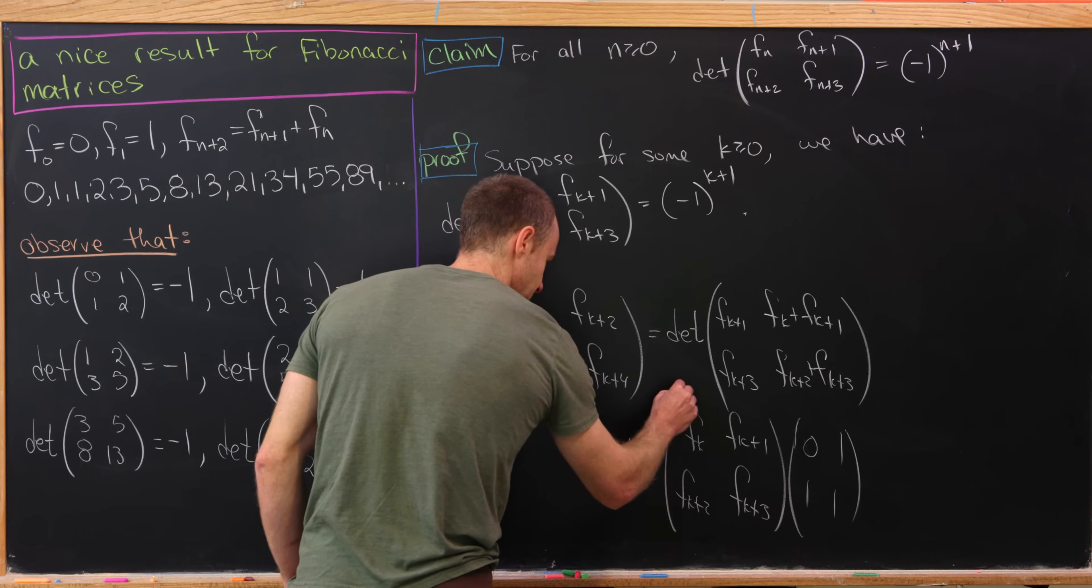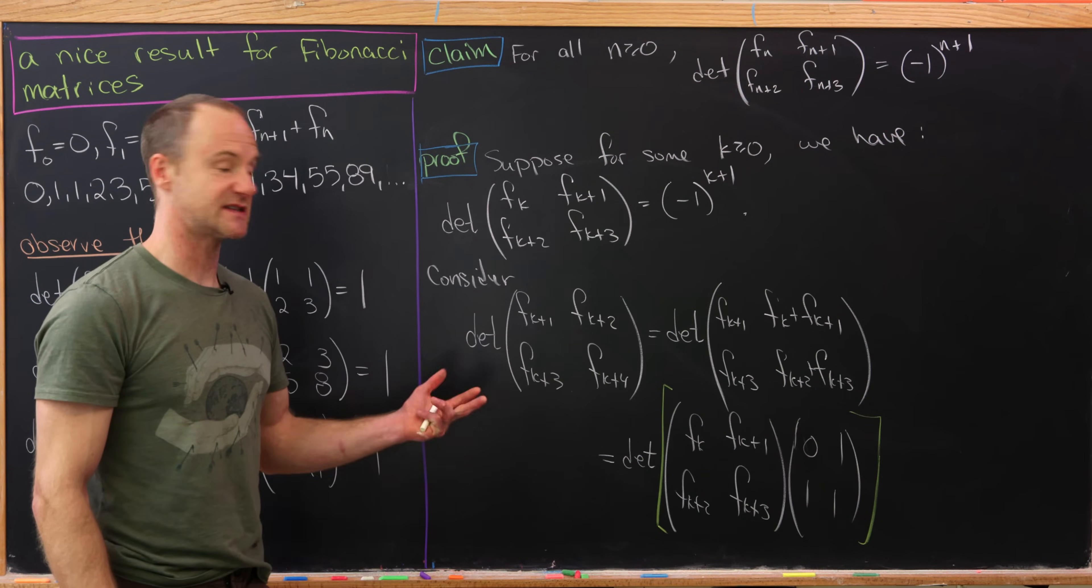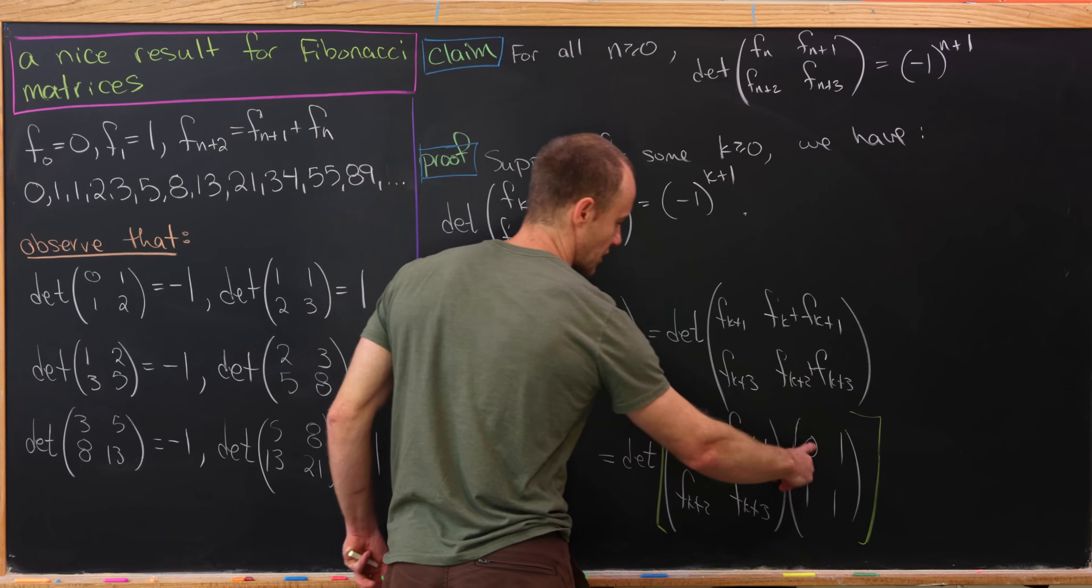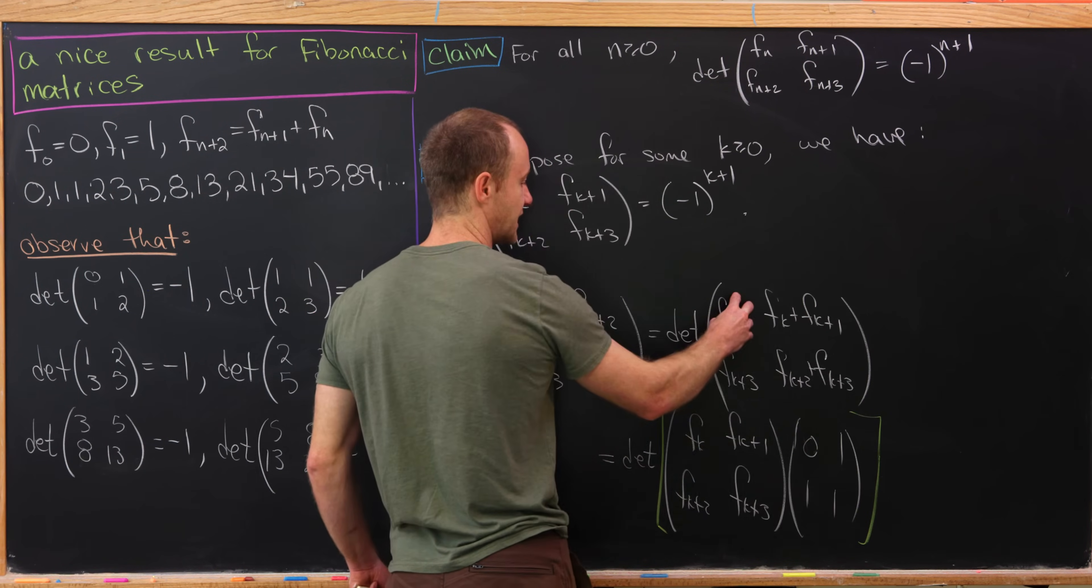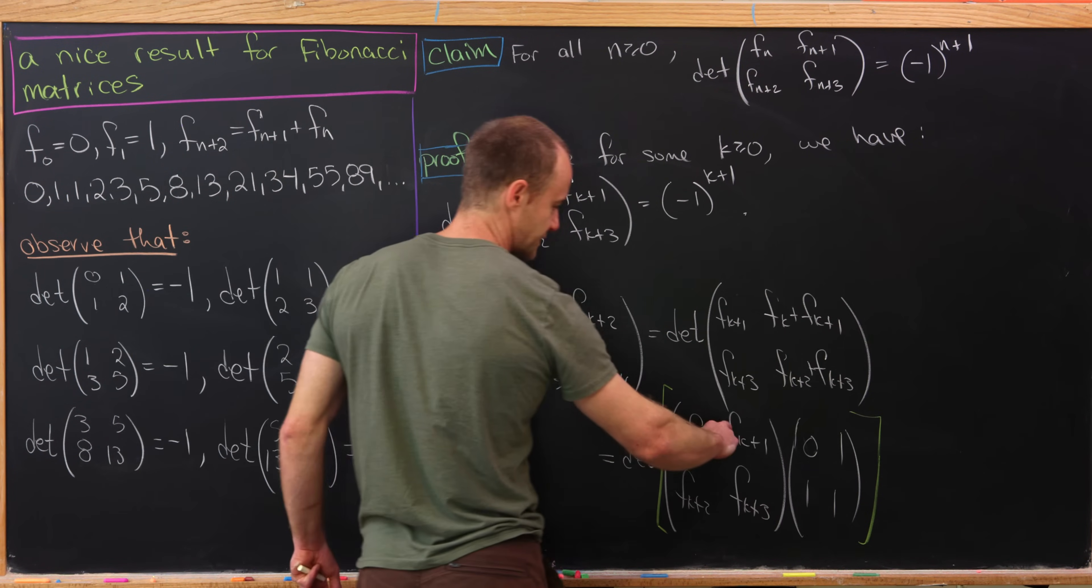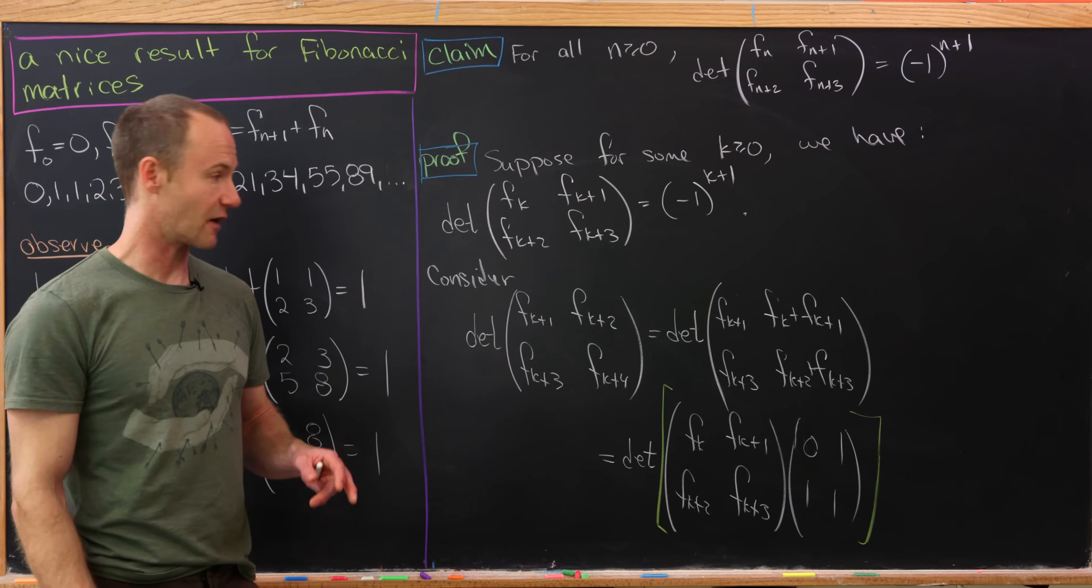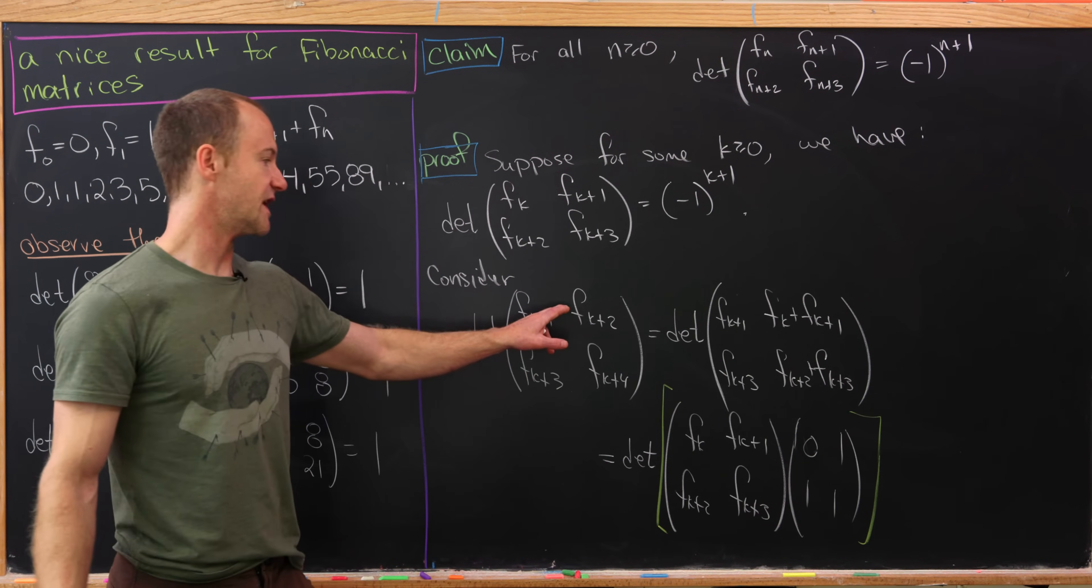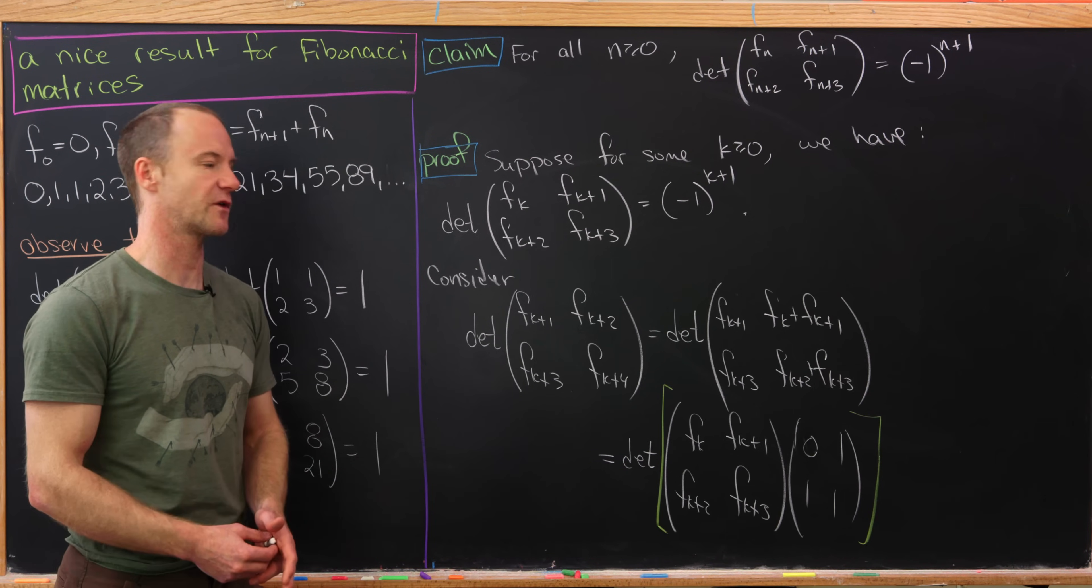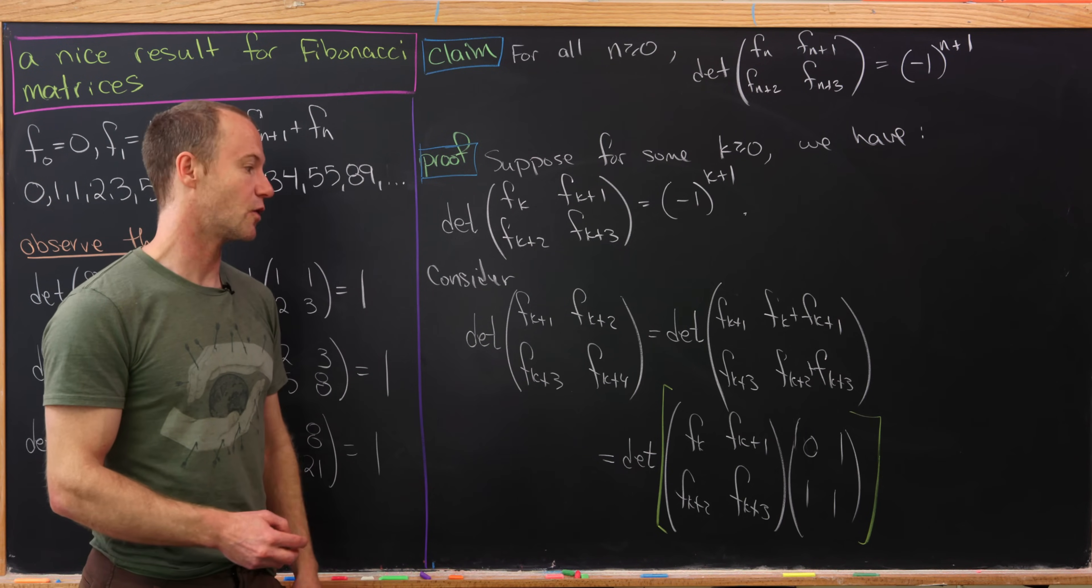So let's maybe talk our way through that. Well, notice if we were to do our standard rules of matrix multiplication by swiveling this first row into this first column, we would get an entry of fk+1 here. Furthermore, if we swivel this first row into the second column, we get the sum of the elements in that row, or this object right here, which by our recursion simplifies to this. And then so on and so forth for the second row. So that means this factorization indeed works.